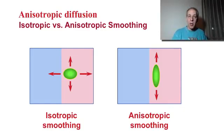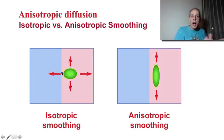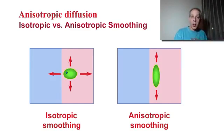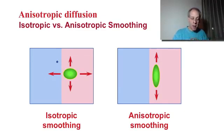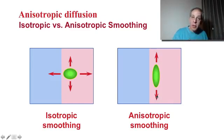If you remember when we discussed Gaussian filtering and averaging images, those were like diffusion of pixel values across the image. What was happening is that we obtained blurring, because if there were edges, we were averaging across edges — letting pixel values across edges be mixed up. That's what produced blurring, and that was isotropic smoothing: it went all around regardless of boundaries.